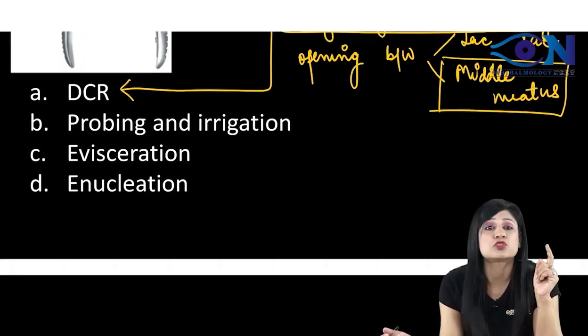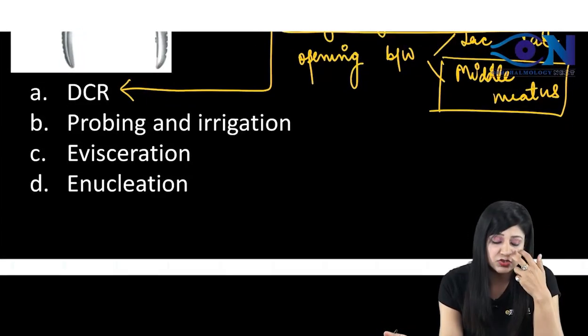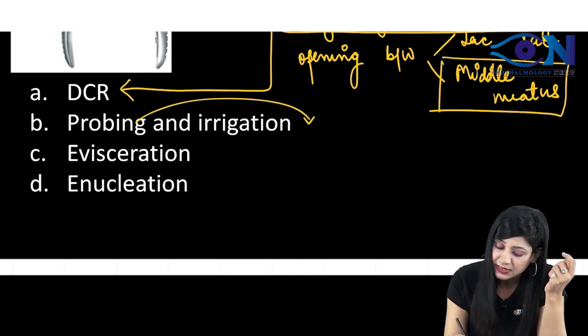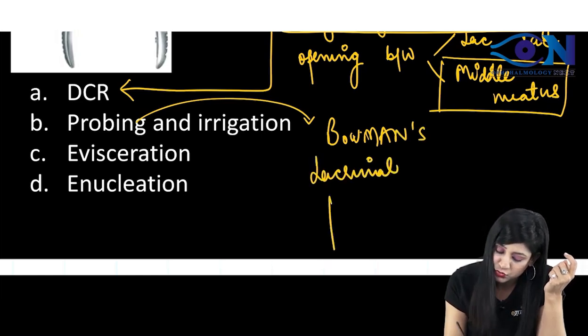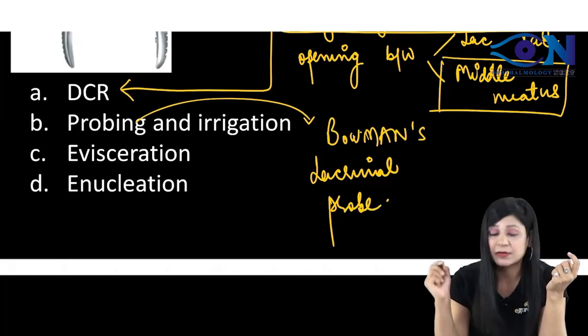Then they have given you the other instruments, probing and irrigation. For probing basically we use the Bowman's lacrimal probe. The name of that instrument is the Bowman's lacrimal probe.